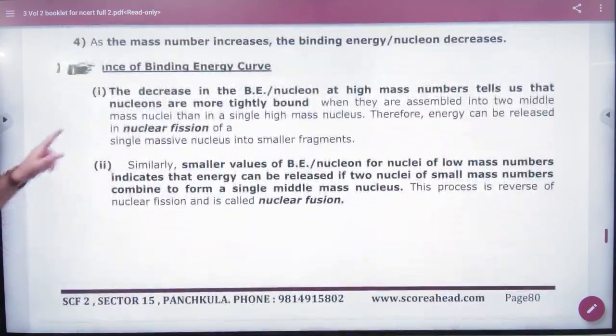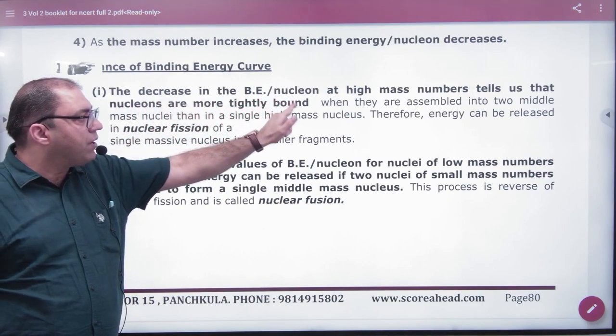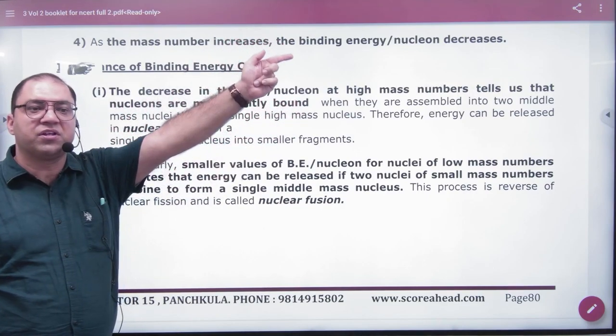So, I have to explain the fission and fusion. I have to write: decrease in binding energy per nucleon at higher mass number, like uranium.